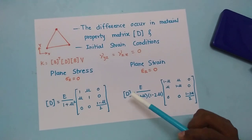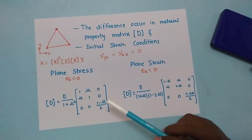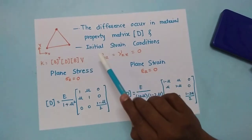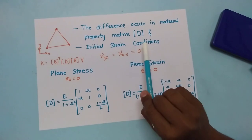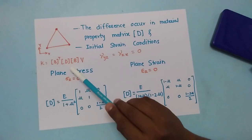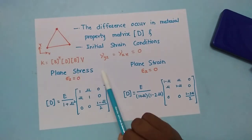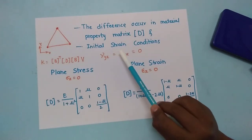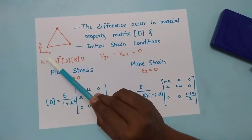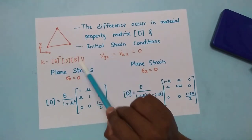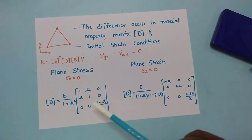The triangular element is used for both plane stress and plane strain conditions. The difference between these two cases occurs in the material property matrix, called the D matrix. This D matrix appears in the stiffness formulation as B-transpose times D times B, multiplied by its volume. Additionally, the initial strain conditions differ: since the element lies in the x-y plane, the shear strains in the y-z and z-x planes are zero.